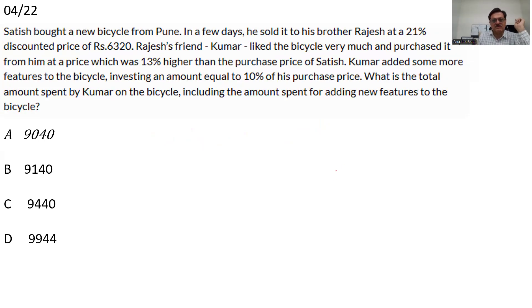Stop here again if you want to read this question. Satish has bought a cycle from Pune. In a few days, he sells it to his brother Rajesh at a discount of 21% price of 6320. That means 6320 is 79%. If I divide 6320 by 79, I will get the original price.